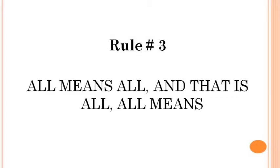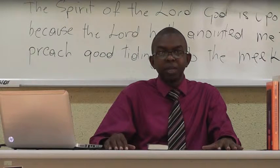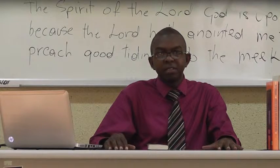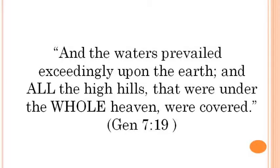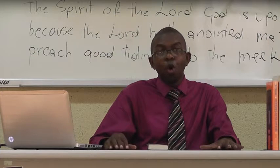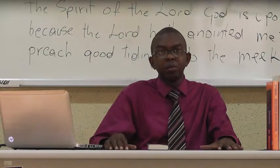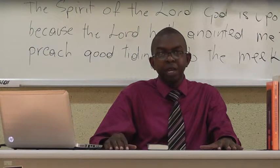Rule number three: all means all, and that's all that all means. As an example, Genesis 7:19 says, 'And the waters prevailed exceedingly upon the earth and all the high hills that were under the whole heaven were covered.' If the Bible says all the high hills under the whole heaven, then we must accept that every hill on the earth was covered without doubt.